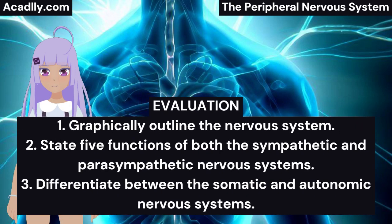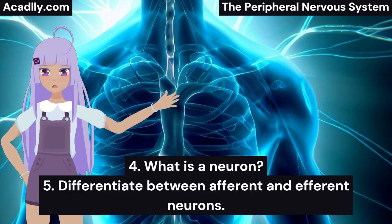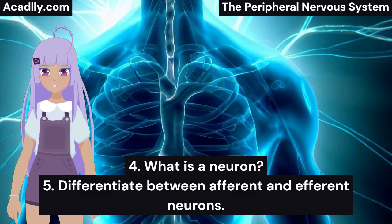Evaluation. 1. Graphically outline the nervous system. 2. State five functions of both the sympathetic and parasympathetic nervous systems. 3. Differentiate between the somatic and autonomic nervous systems. 4. What is a neuron? 5. Differentiate between afferent and efferent neurons.